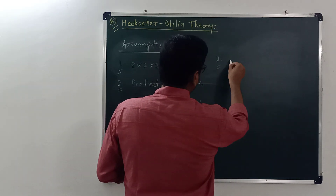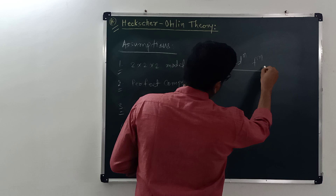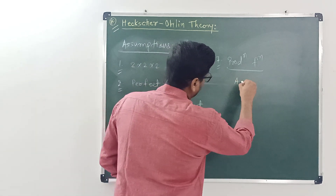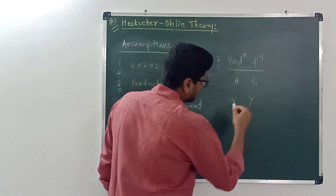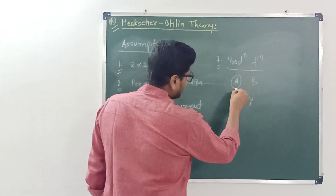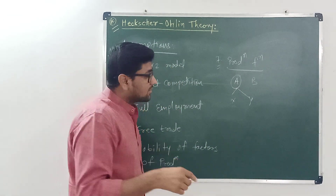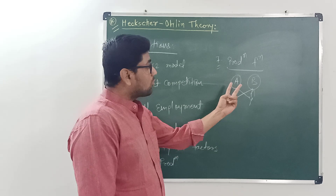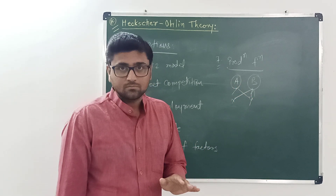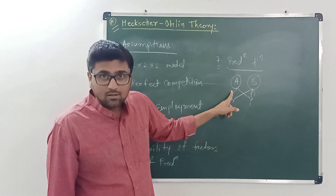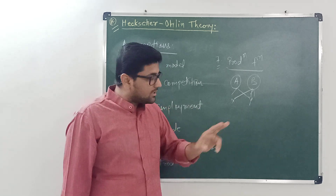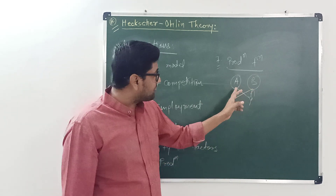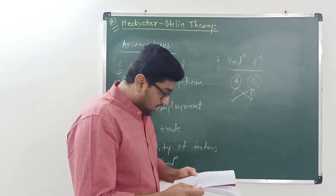The seventh assumption concerns the production function. The production functions of the two goods are completely different. Suppose we have two goods, good A and good B, and two nations X and Y. The production function of good A is the same in both nations, and similarly the production function of good B is the same in both nations. However, the production functions of good A and good B are completely different from each other.